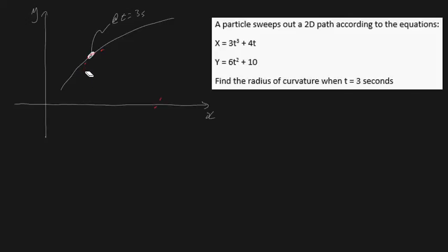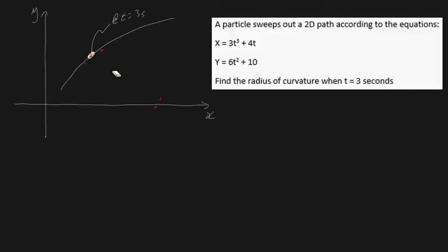Before we solve it, let's quickly talk about tangential coordinate systems. In the tangential coordinate system, the axis will be tangential to our path — this direction will be t. We'll have to go through the velocity analysis to confirm which direction. With our normal coordinate system, it'll be normal to our tangential path. In order to find out whether our circle is above or below our curve, we actually need to go through the acceleration analysis.